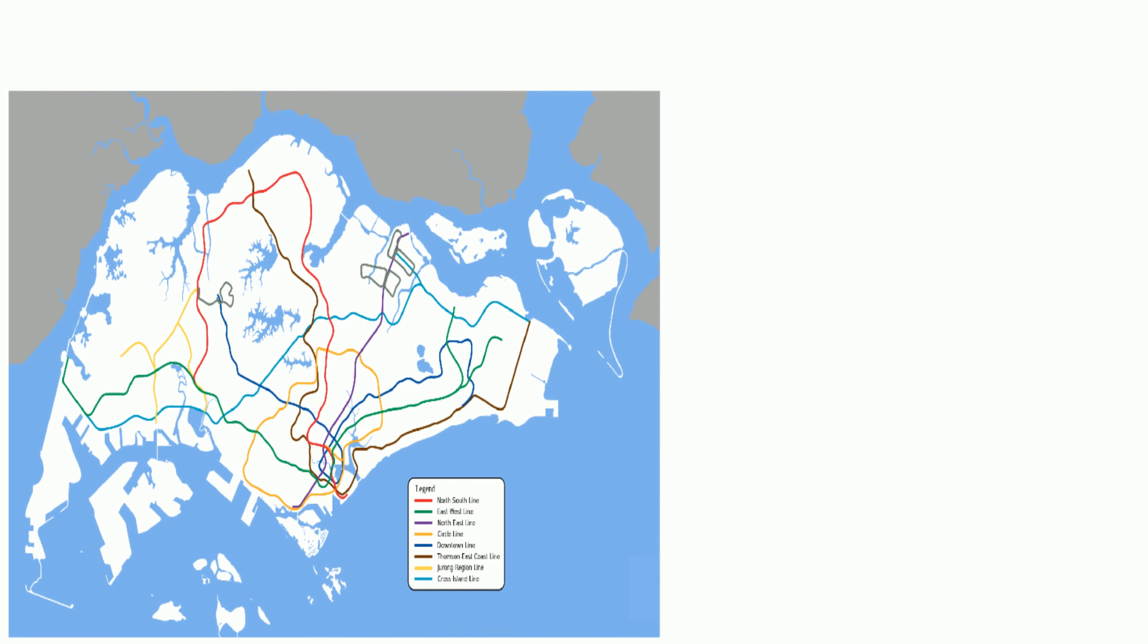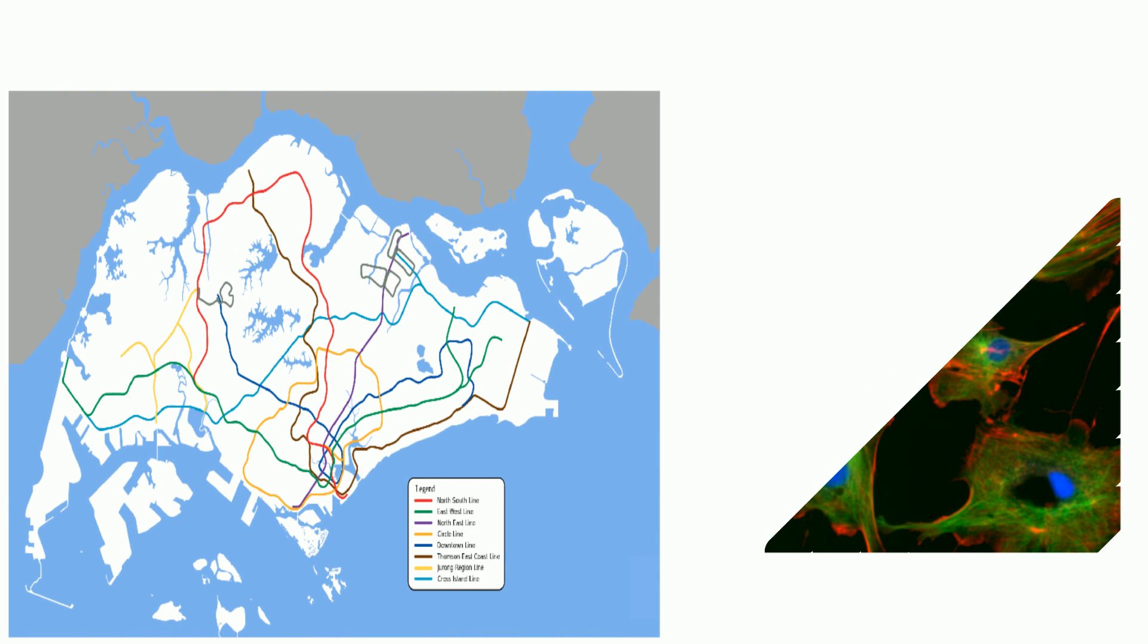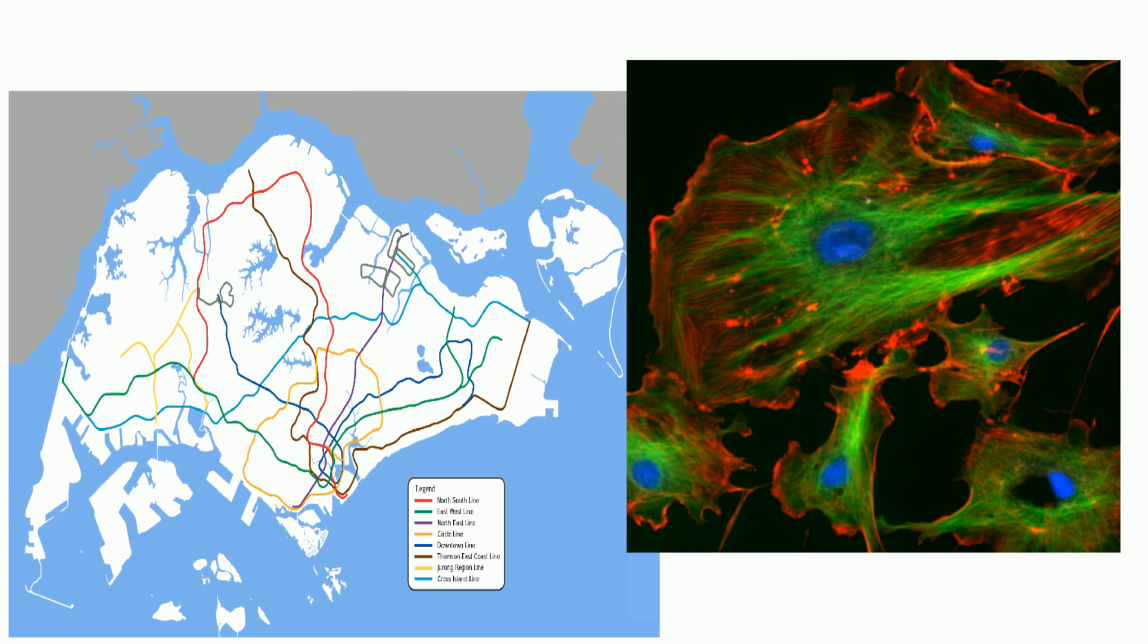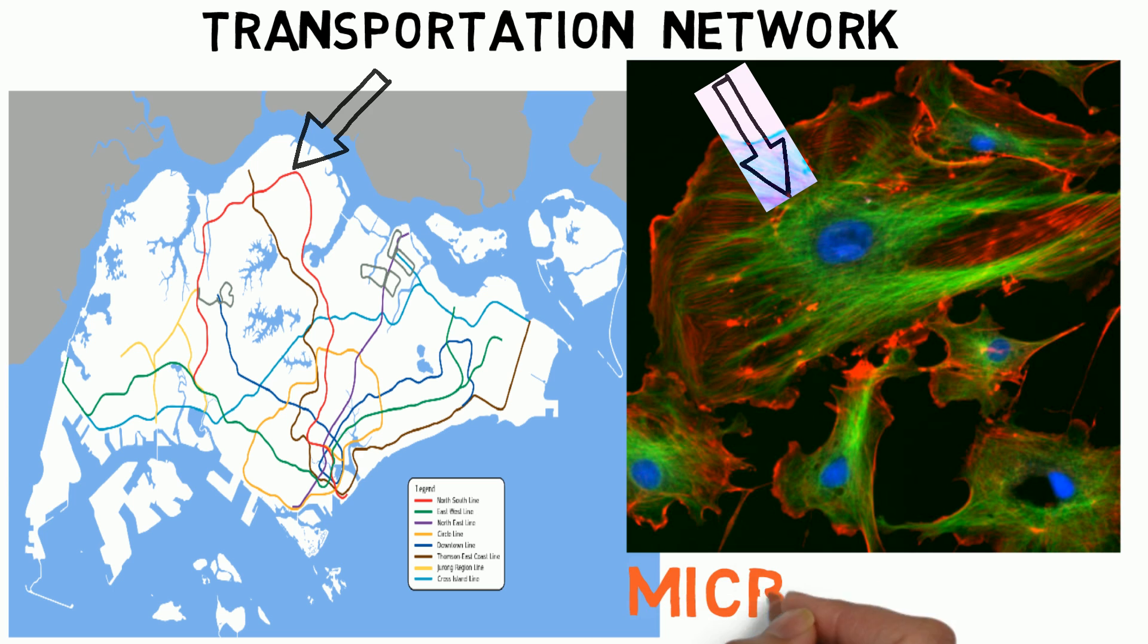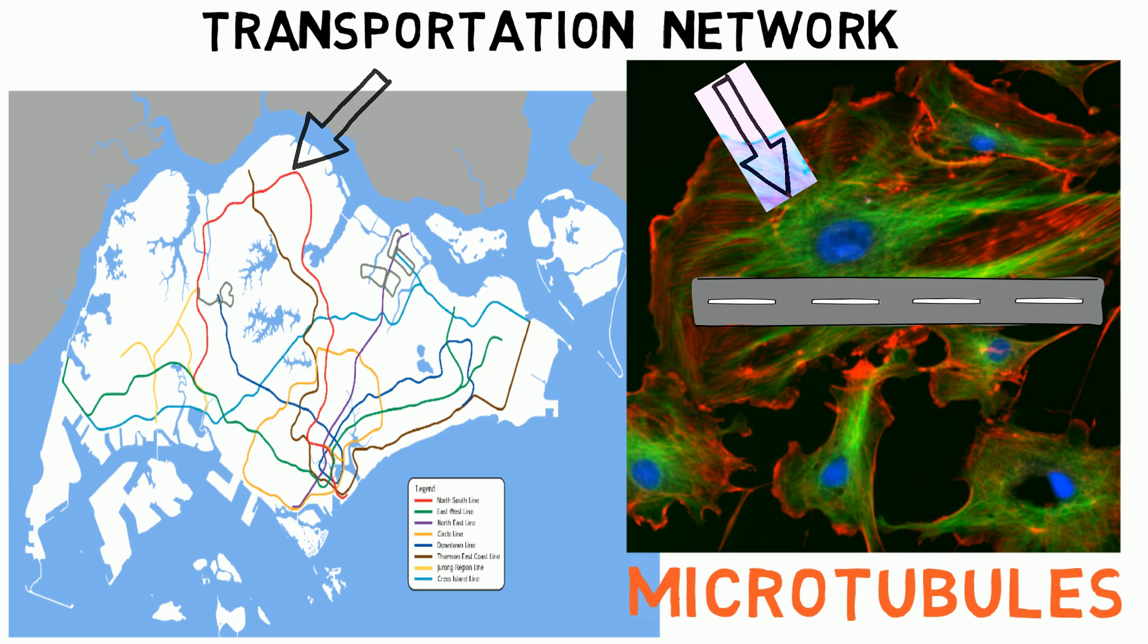A city is linked by its transportation network. A cell is like a city and requires a network for transportation too. As mentioned in the last video, a function of microtubules is for intracellular transport.